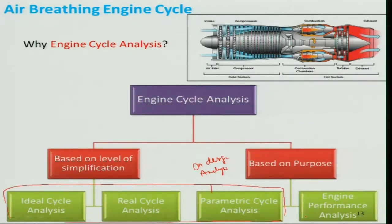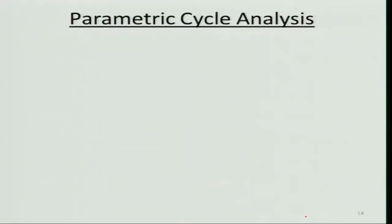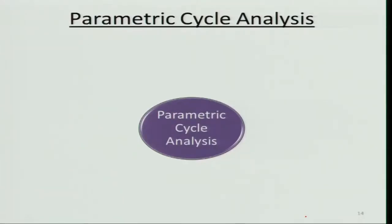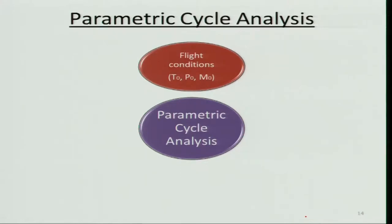Parametric cycle analysis is very important. Here, flight conditions like altitude — which means temperature and pressure at that altitude — and flight velocity are varied to see how they affect thrust and other performance parameters. We also look at design limitations such as turbine inlet temperature, since the turbine material is the most critical component in the engine.